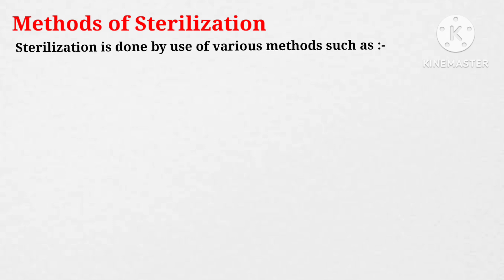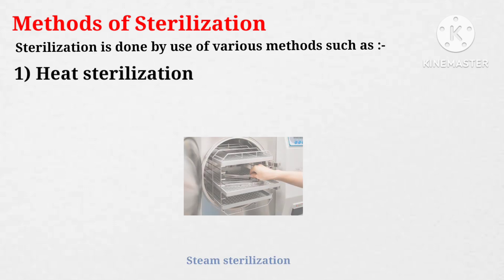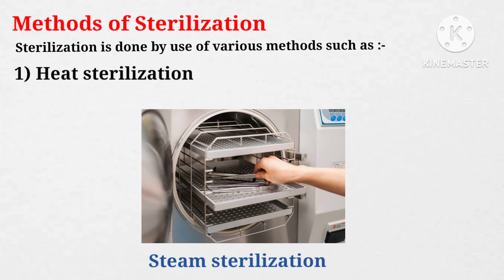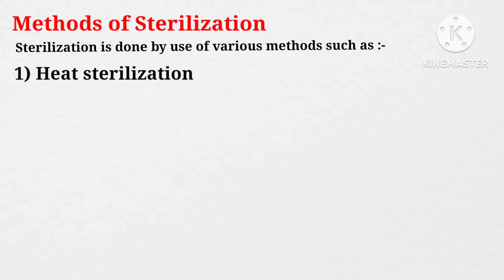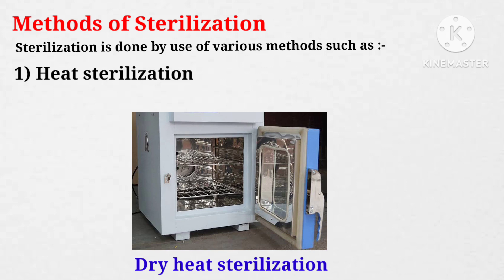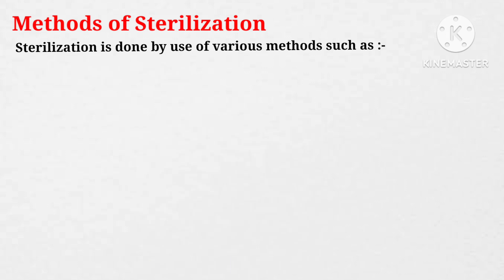Next are the methods of sterilization. Sterilization is done by use of various methods. The first one is heat sterilization. In heat sterilization, various time-temperature combinations are used to sterilize the product. In this method, steam and dry heat sterilization methods are commonly used.